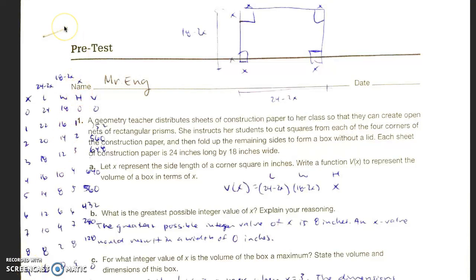This is Mr. Ng going over the pre-test. Question number one. A geometry teacher distributes sheets of construction paper to her class so that they can create an open net of rectangular prisms.